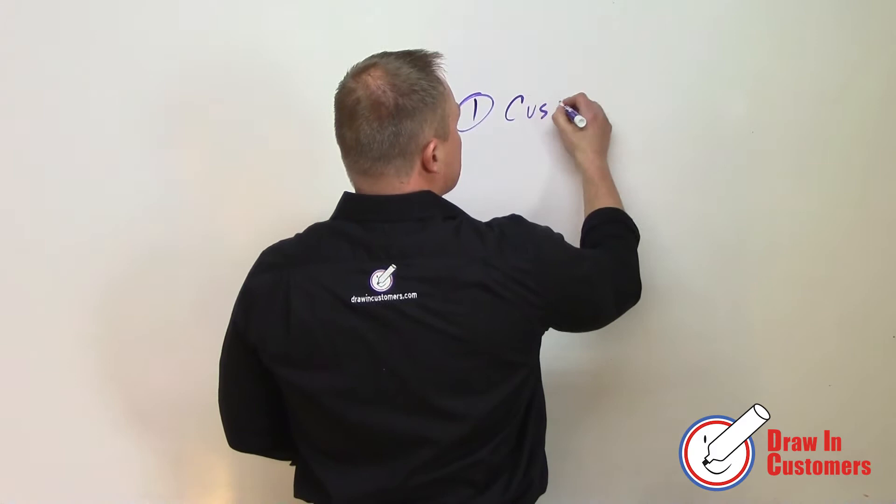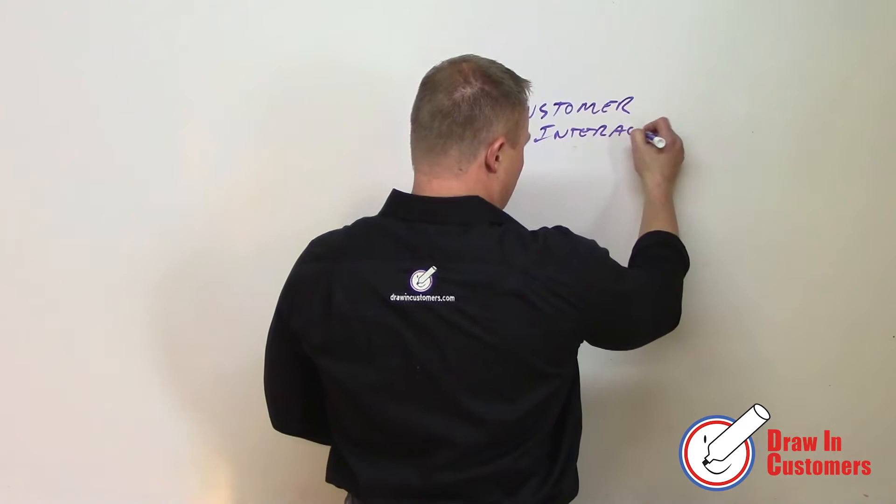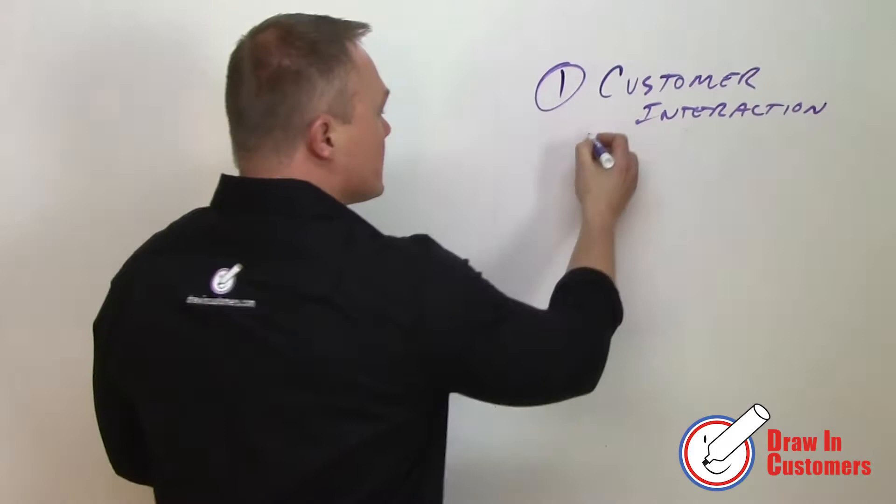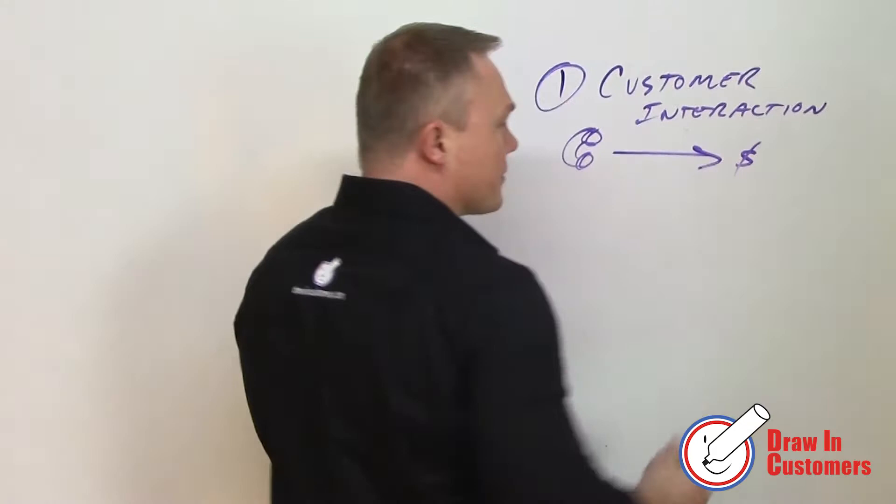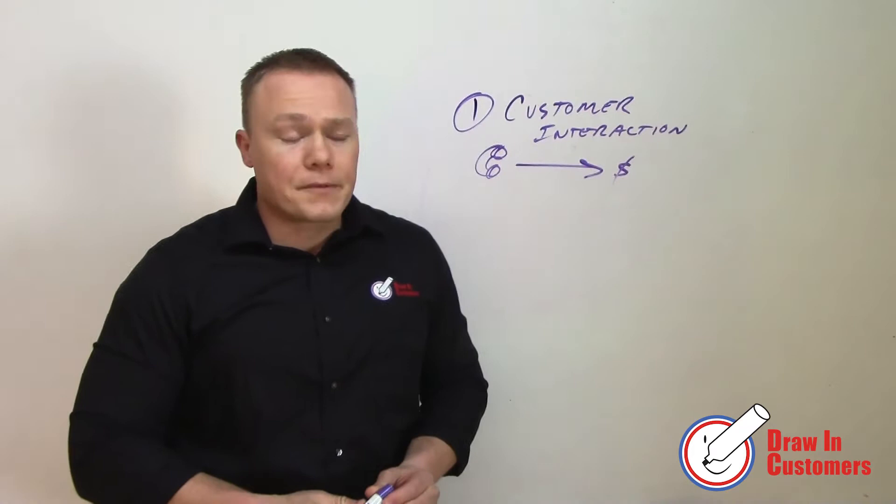System one is the most important one: the customer interaction. You want to follow your customers' path from the original phone call or email, however they contact you, to the actual completion where you're actually getting some money from them.